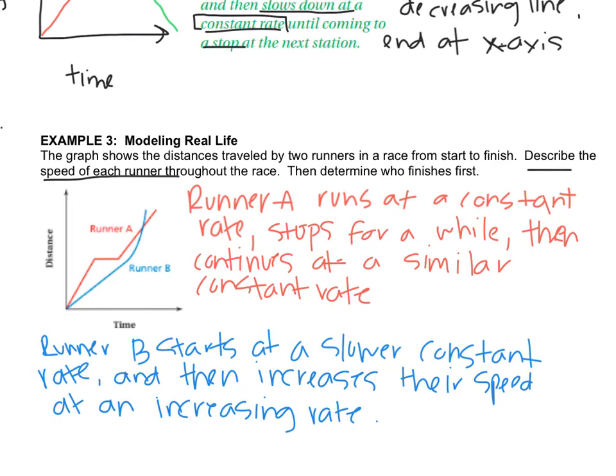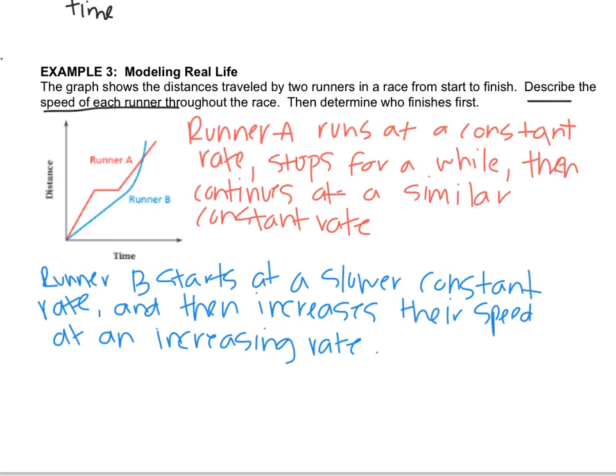If we want to answer who finished the race first, who got to this distance first, it was Runner B. Runner A really had it all the way until the end, but then Runner B, with that increasing rate, really smoked him. So Runner B wins.